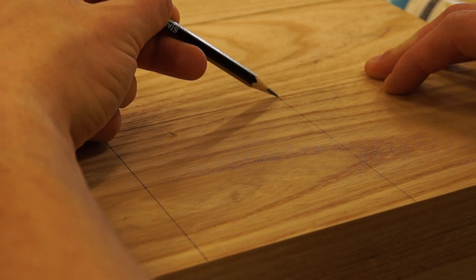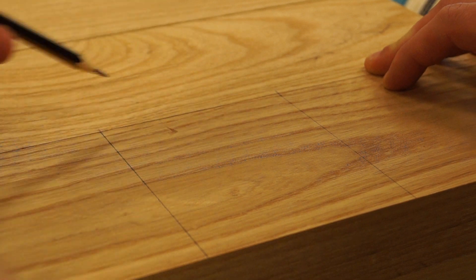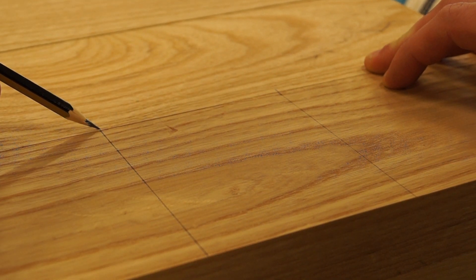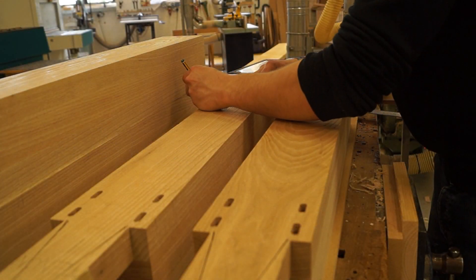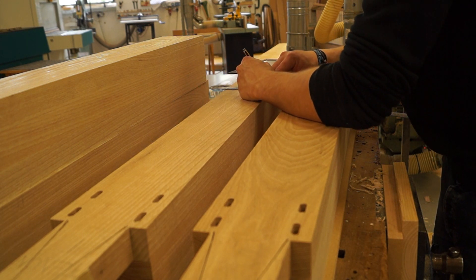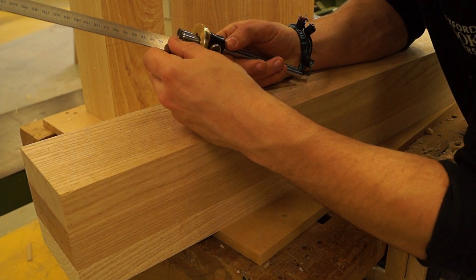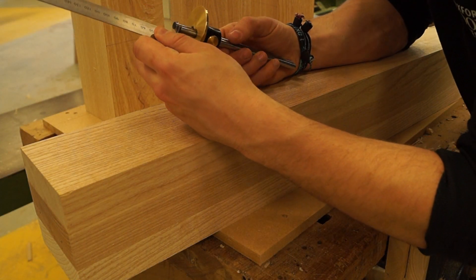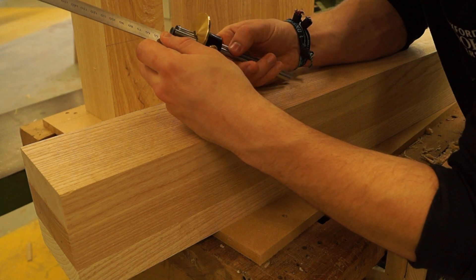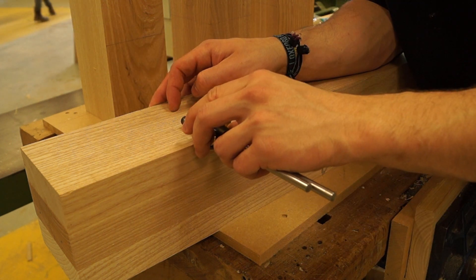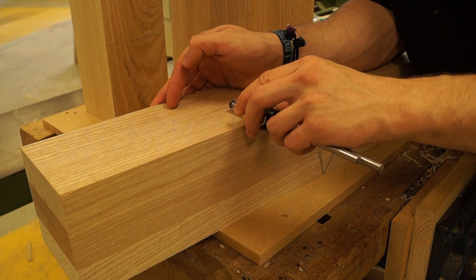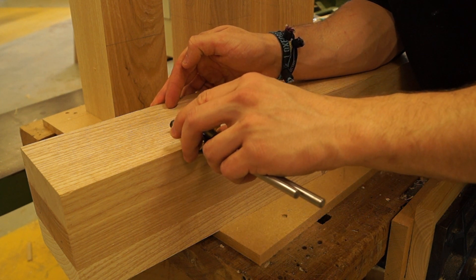To save you the faff of marking down for the shoulders on each individual leg, just use that first one as the template for the rest of them. Little note here: if you're going to use one for the template, always use the first one that you mark off. If you mark the first one to the second one, then the second one to the third one and so on, your discrepancies start adding up and then things will become severely misaligned. So always use the first one as a template for the rest of them.